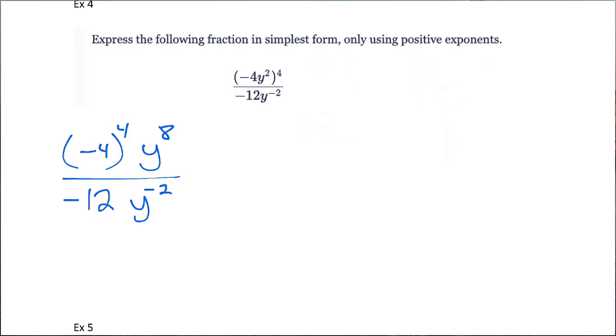So, 4 to the 4th, if you didn't know how to do 4 to the 4th, you could do it on a calculator, but 4 to the 4th is a pretty big number, actually. 4 to the 4th is 256. So, if we have 256, and since it's negative, it multiplies it more times. Again, we have 256 divided by negative 12, y to the 8 minus negative 2. Remember, if you have division, you subtract those exponents.